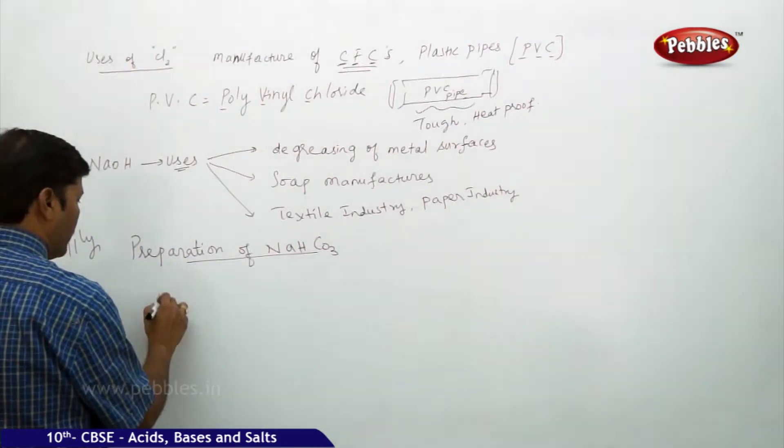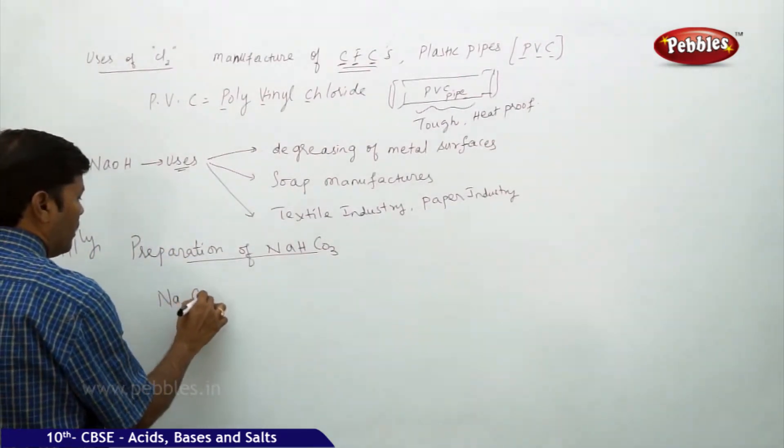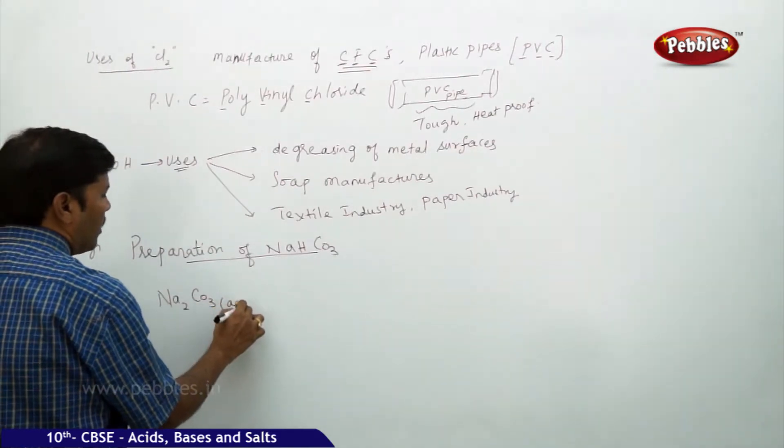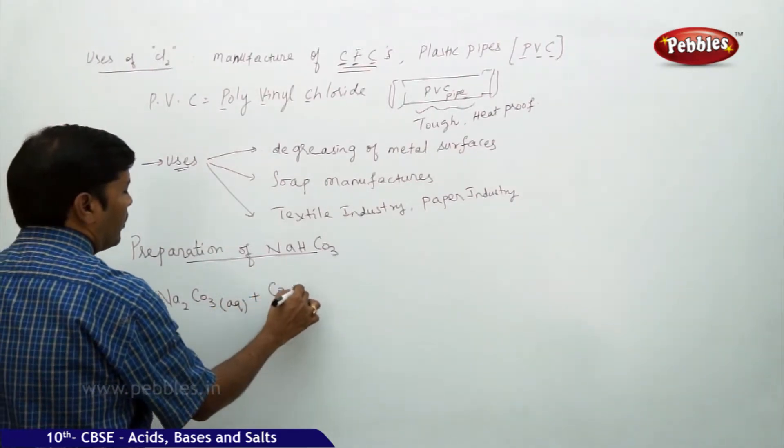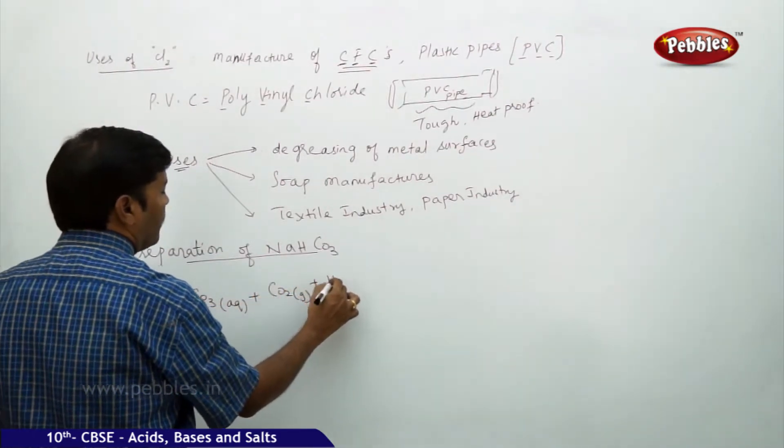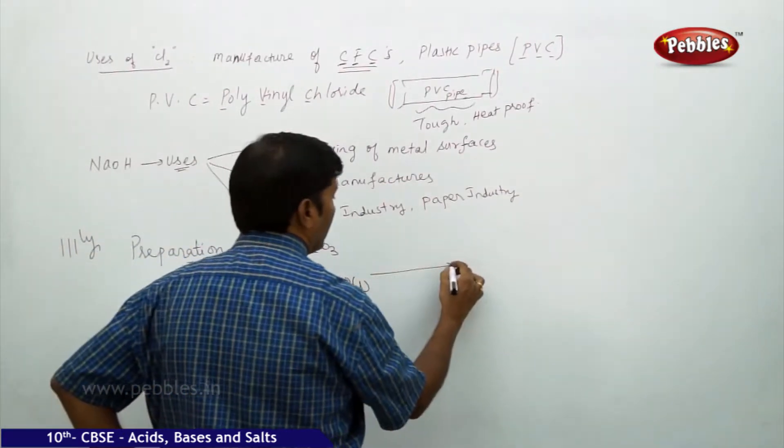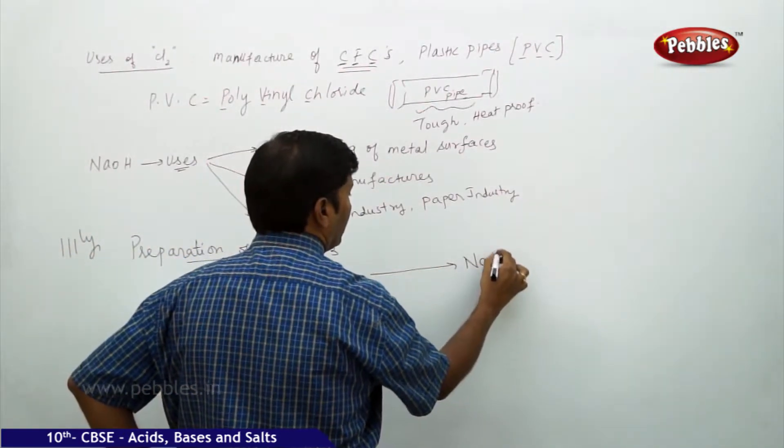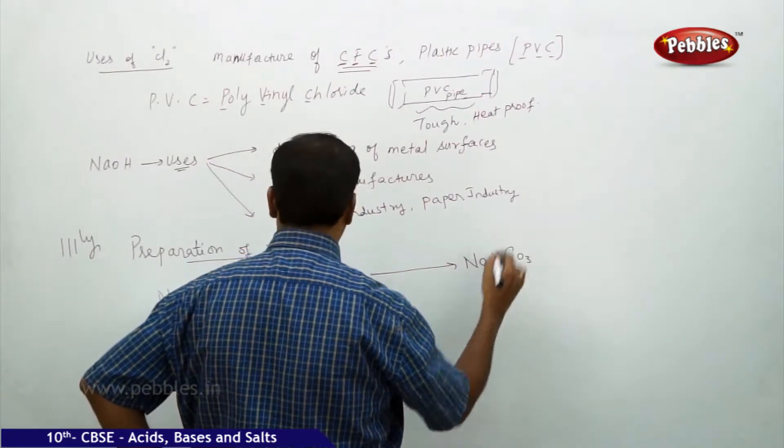Actually you can prepare NaHCO3 by taking sodium carbonate when treated with carbon dioxide gas and when treated with water in the presence of liquid gives rise to NaHCO3.